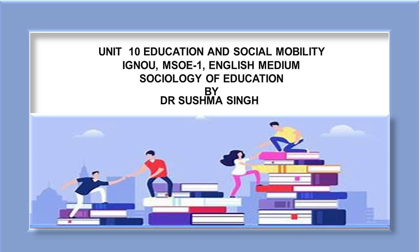Hasley argued that equality of educational opportunity is essentially a discussion about education for whom and to do what. The third phase was concerned with the reprisal of the function of education in contemporary societies. The concept of equality of educational opportunities has undergone significant change over the decades. The core of the idea, however, remains that all children should have an equal chance to succeed in a common school system.